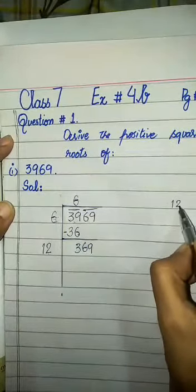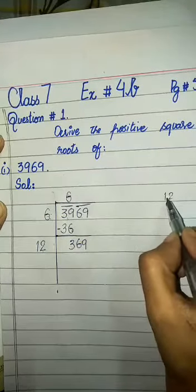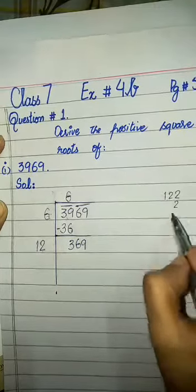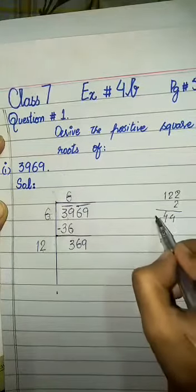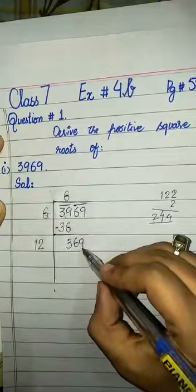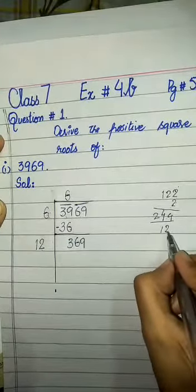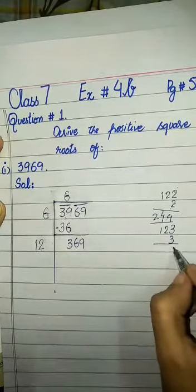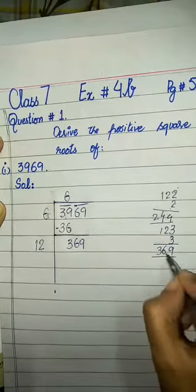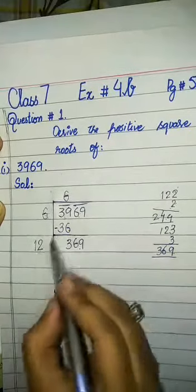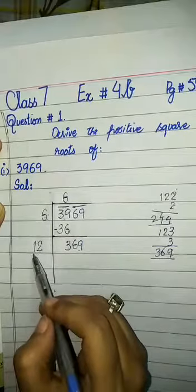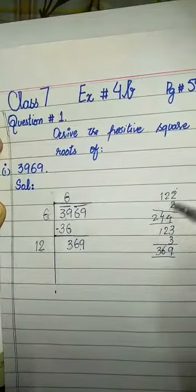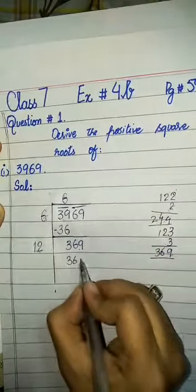We need to find a number to place next to 12. For example, try 2: 122 × 2 = 244, which is less than 369, but we need to check further. Try 3: 123 × 3 — 3×3 is 9, 3×2 is 6, 3×1 is 3 — giving 369, which is exactly the number we needed. So 3 is the correct digit. This step is very important: you write 12, then place the trial digit, multiply, and check for the same or closest answer.